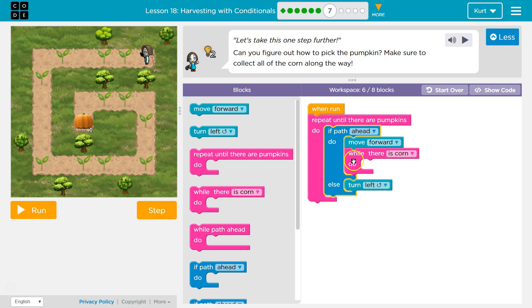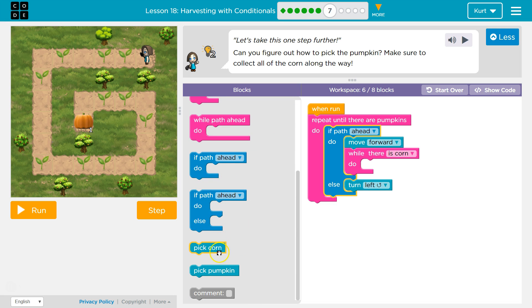So, if path ahead, move forward. While there is corn, what do we want to do? We want to pick it, right? If I did an if statement here for if there's corn, pick it. I'd pick one ear, and then be done. Repeat. And then I'd end up moving on before I got it all.